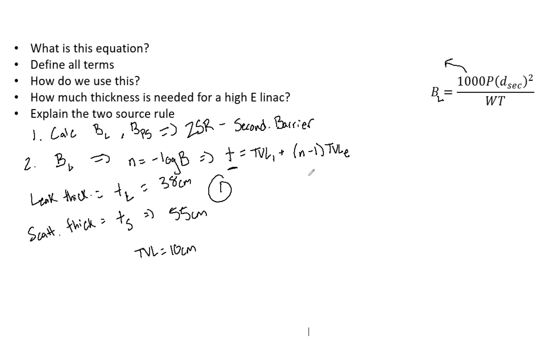The other option is if the thickness of the leakage, say is 50, and then the thickness of the scatter is 55 cm. Well, now they are only 5 cm different. The TVL is 10 cm. So now what we need to do is take the highest that we have. So we're going to do 55 cm. And we're going to add one HVL to that. And then that will incorporate and be strong enough to shield for both leakage and scatter.